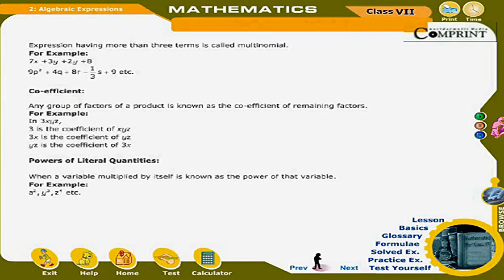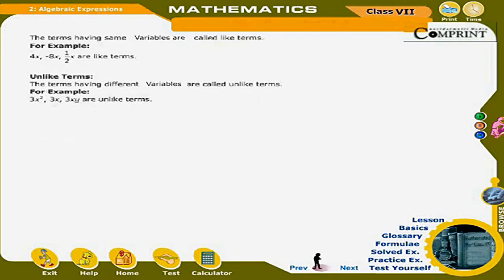Powers of literal quantities: When a variable is multiplied by itself, it is known as the power of that variable. For example: a², y³, z⁴, etc. Like terms: Terms having the same variable are called like terms. For example: 4x, −8x, (1/2)x are like terms. Unlike terms: Terms having different variables are called unlike terms. For example: 3x², 3x, 3xy are unlike terms.